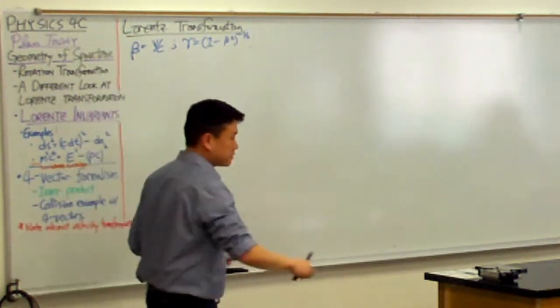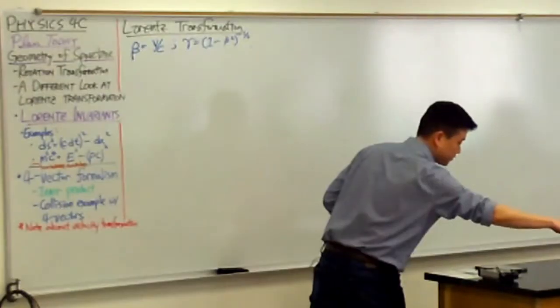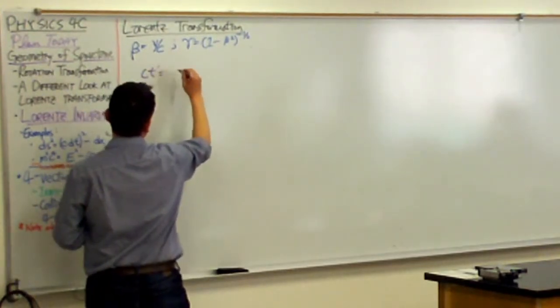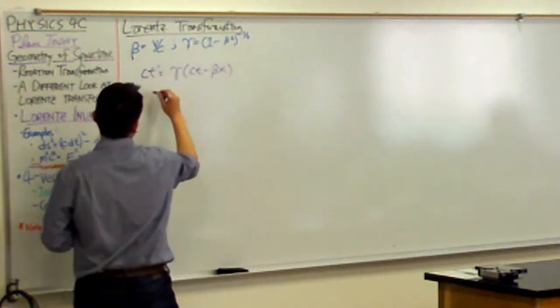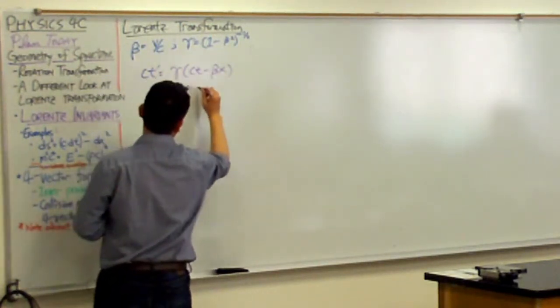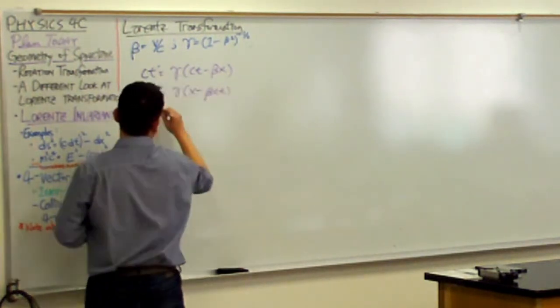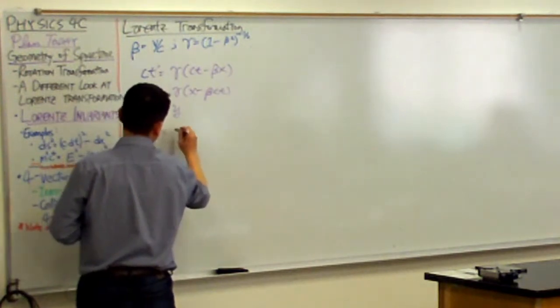I've written down this transformation multiple times, so let me just quickly write it down without wasting too much time. Ct prime is gamma Ct minus beta x, x prime is gamma x minus beta Ct, and y prime is equal to y, z prime is equal to z.